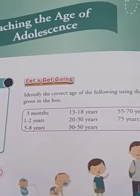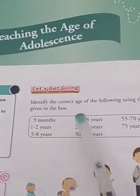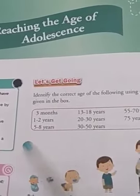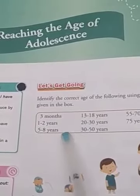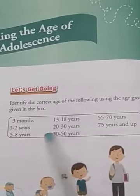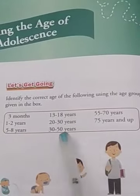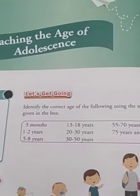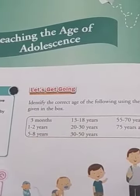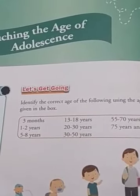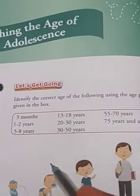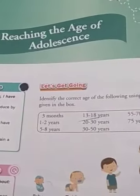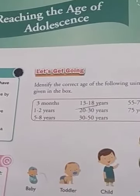As we see by following the flowchart, we can distinguish age groups: 1 to 2 years, 5 to 8 years, 13 to 18 years, 20 to 30 years, 30 to 50 years, 55 to 70 years, and 75 years and up. So this is a distinction of age groups. The correct age of adolescence from these is 13 to 18 — this is the age of teenagers.